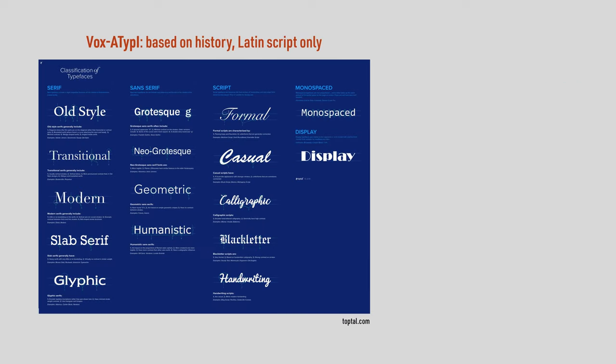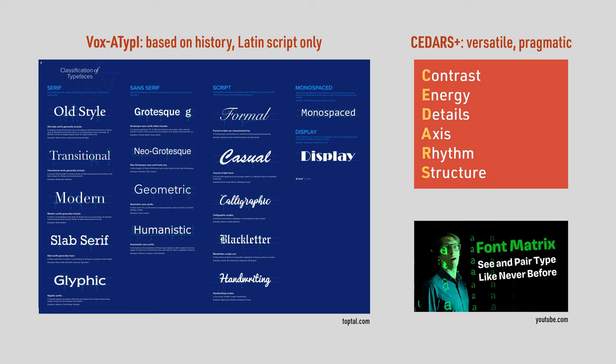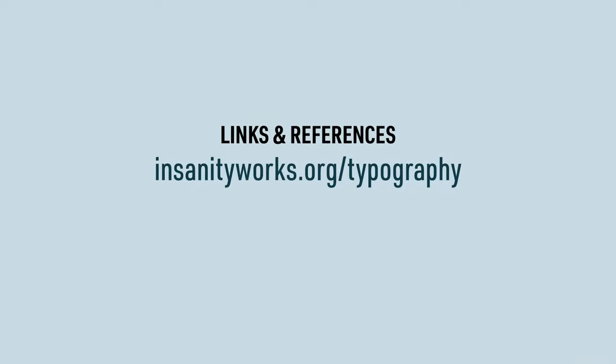The final thing I'll say about type classification is that there isn't just one system to classify typefaces. The system I've been talking about in this video comes from art history and covers only the Latin script. A more modern, inclusive, and pragmatic system is Cedars Plus. If you want to learn more about this and about font pairing at the same time, check out designer Oliver Schöndorfer's font matrix video on his channel. And now, for real this time — bye!